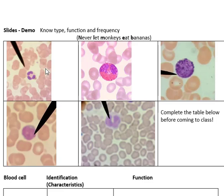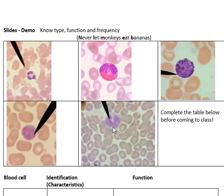Don't get leukocyte confused with lymphocyte. Lymphocytes are very easy to confuse with monocytes. They are actually very distinctly different — the monocyte looks like a telephone receiver and the lymphocyte looks like a blob filling up almost the entire cell. But look carefully at the size of the red blood cells (erythrocytes) and compare them to the sizes of these white blood cells. The monocyte is going to be much, much larger — it's the largest white blood cell, more than double the size of the erythrocytes.